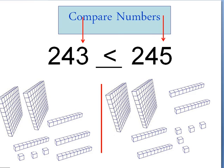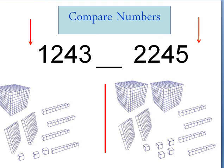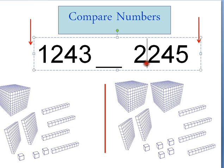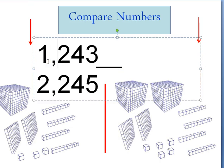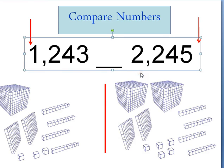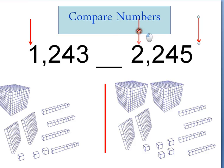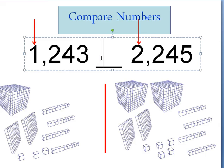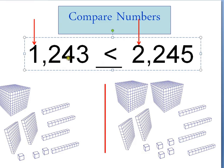If I add thousands to the mix, I still do things the same way. This number has ones, tens, hundreds, and thousands — I'll add a comma in there. I'm going to look at the largest place value, which is now the thousands. This one has two thousands and this one only has one thousand — I have two of these cubes and only one of these cube. So two thousand two hundred forty-five is larger than one thousand two hundred forty-three. One thousand two hundred forty-three is less than two thousand two hundred forty-five.